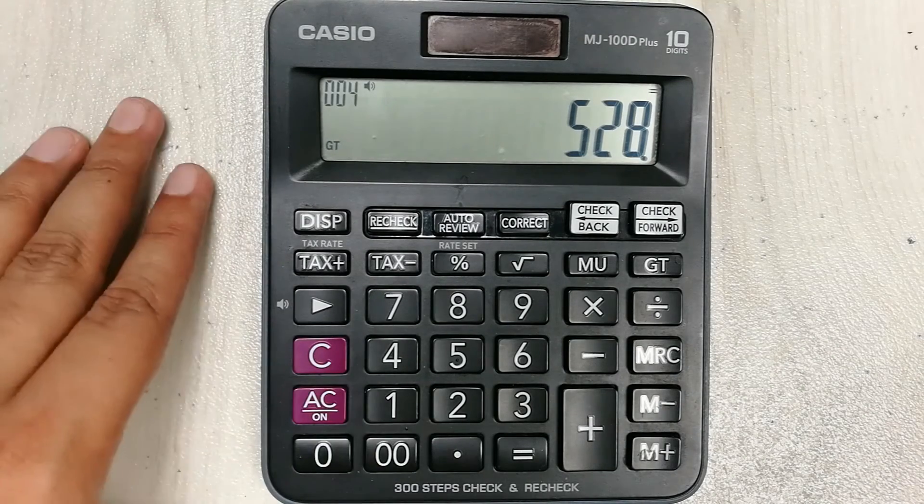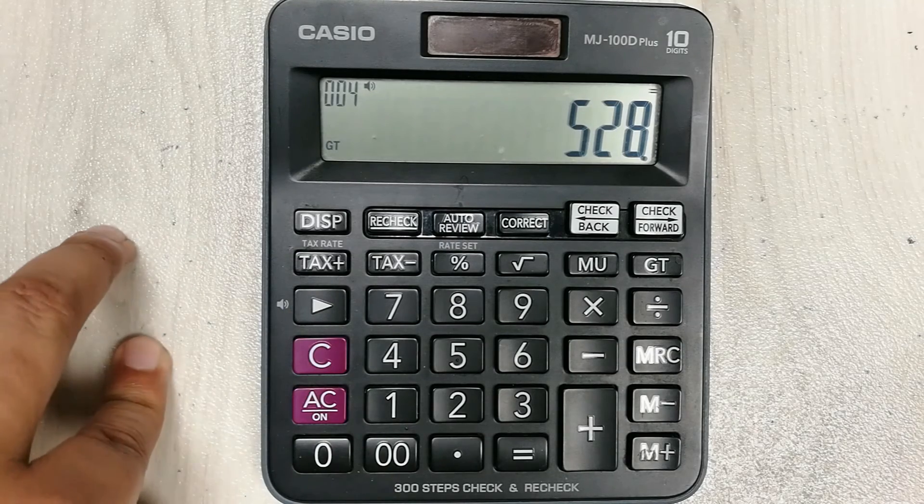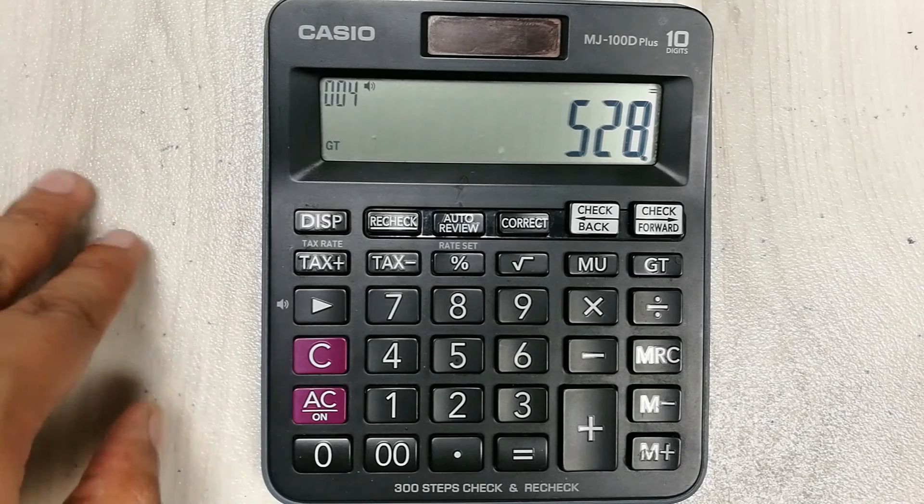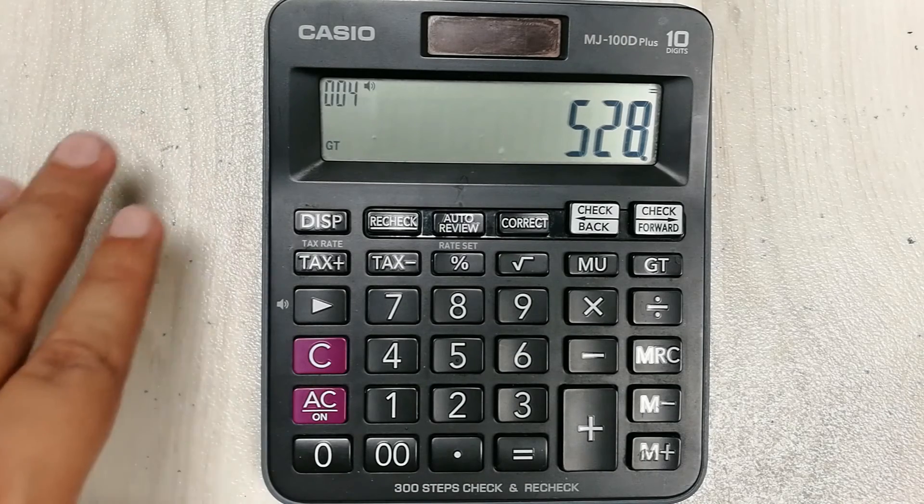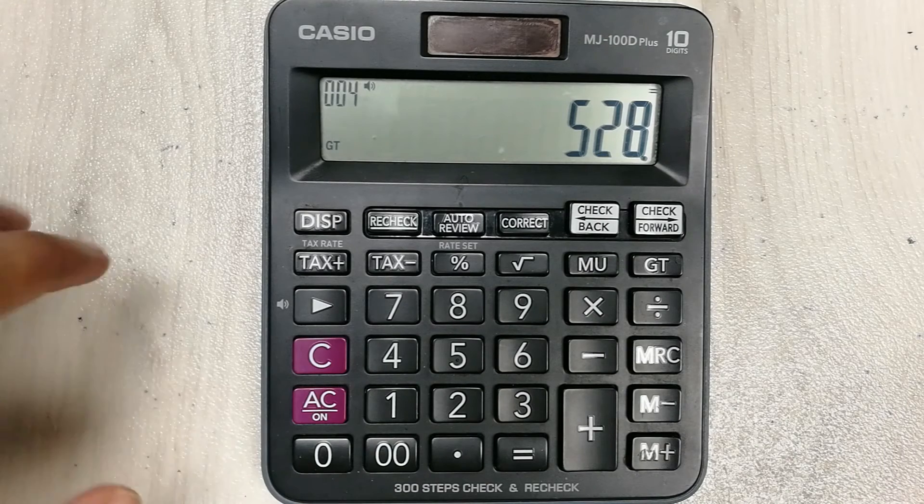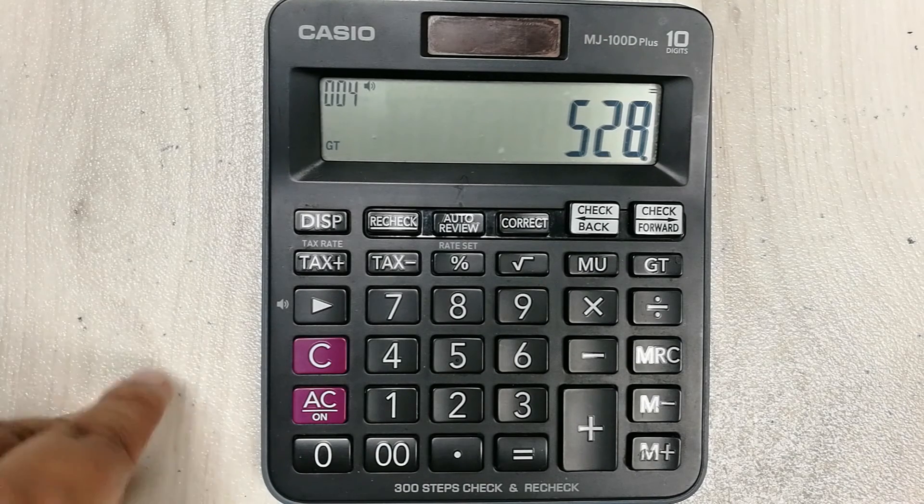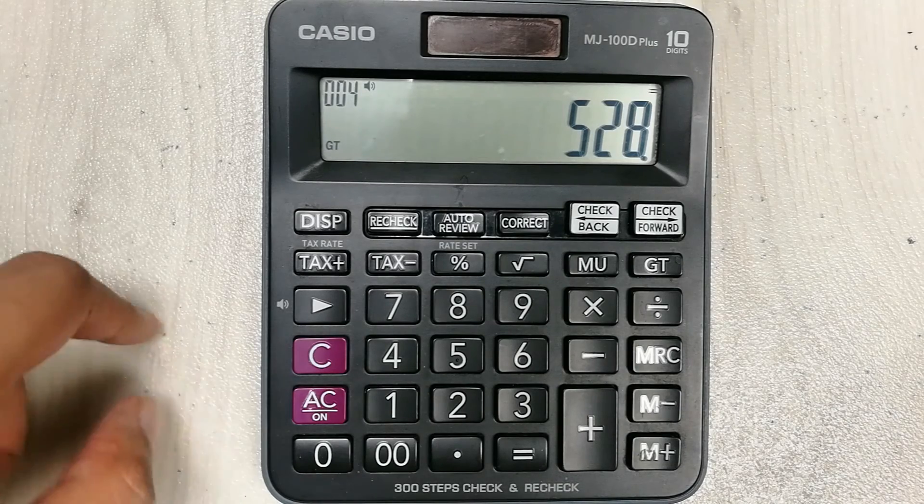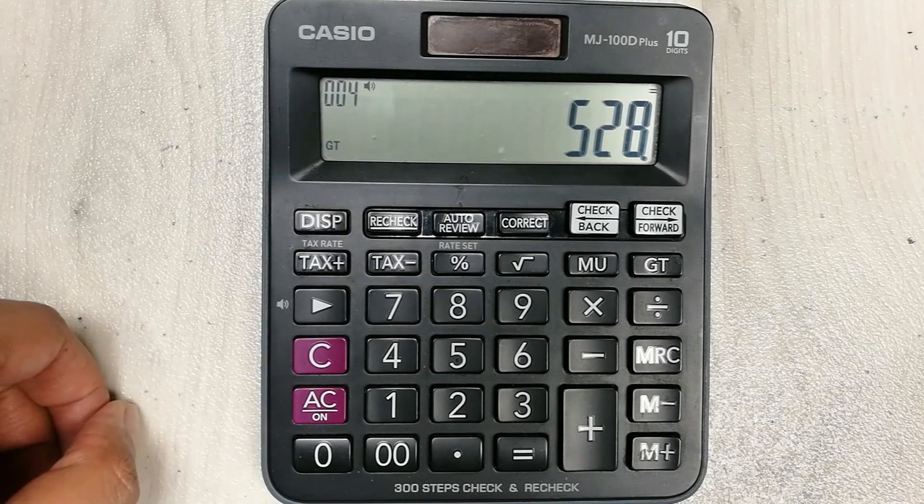This is how you can convert your percentage into marks using your simple calculator. You just have to divide it with 100 and then multiply it with the total exam marks.